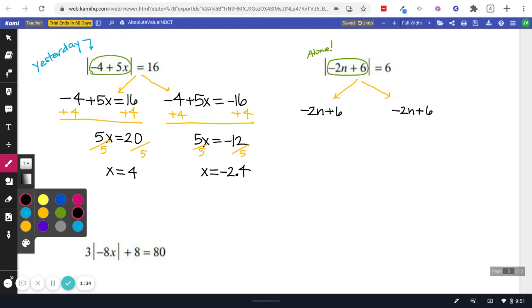Because negative 2n plus 6, the absolute value of that equals 6. That means that negative 2n plus 6 is 6 away from 0. So where could it be? It could be at positive 6, and it could be at negative 6. Remember, that's the part that changes. Notice this 2n plus 6 is the same here as it was in the absolute value, and it's the same here. So that doesn't change.